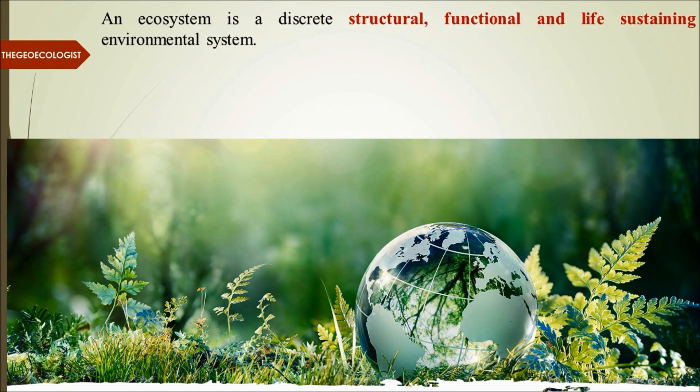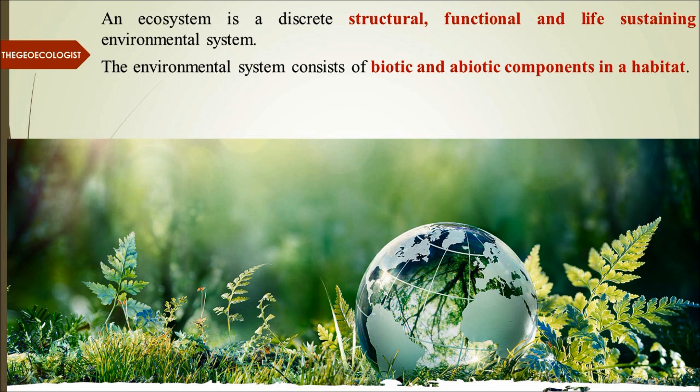An ecosystem is a discrete body — it has a discrete structural, functional, and life-sustaining system. It has its unique idea of its function, which is one important aspect of ecosystem. The ecosystem comprises biotic and abiotic components that interact in a habitat. The habitat is the basic unit where biotic and abiotic components are present and interacting with each other.